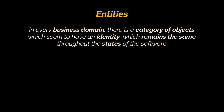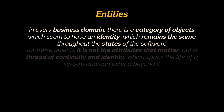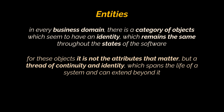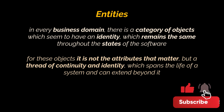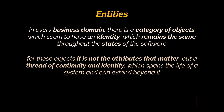Next, entities. In every business domain there is a category of objects which seem to have an identity that remains the same throughout the states of the software. For these objects it is not the attributes that matter, but a thread of continuity and identity which spans the life of a system and can extend beyond it. Such objects are called entities. If we were to implement the concept of a person using a software program, we would probably create a person class with a series of attributes.